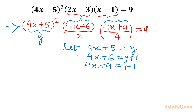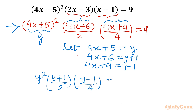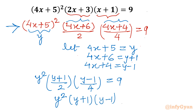So I can write it as y² × (y+1)/2 × (y−1)/4 = 9. Now multiply both sides by 8, giving y² × (y+1) × (y−1) = 72. You can see the difference of two squares pattern — the formula a+b times a−b equals a²−b².